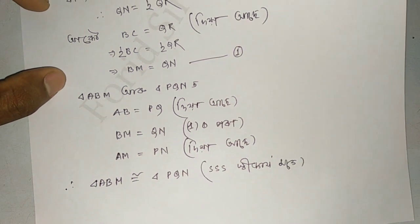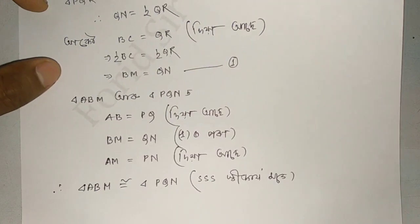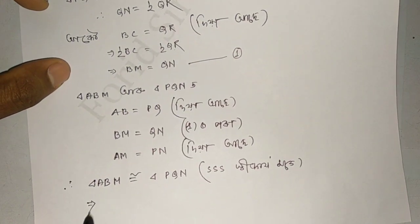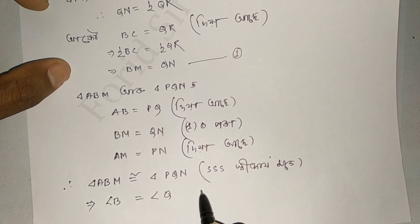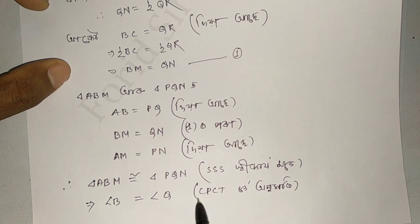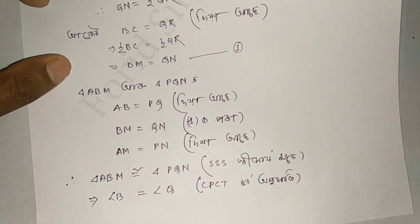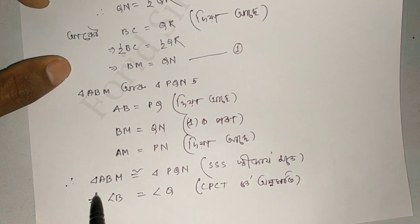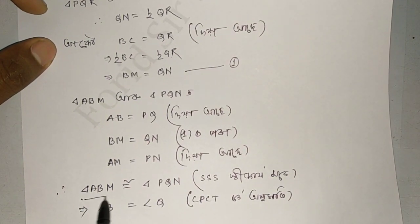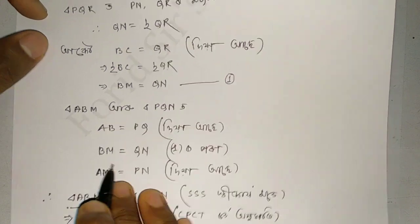So this is how we have the CPCT rule. Using this rule, we can conclude that angle B is equal to angle Q. The CPCT rule states that corresponding parts of congruent triangles are equal.